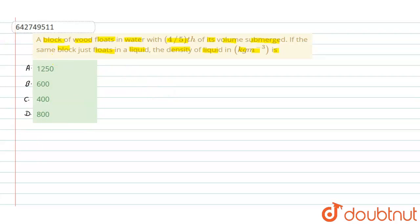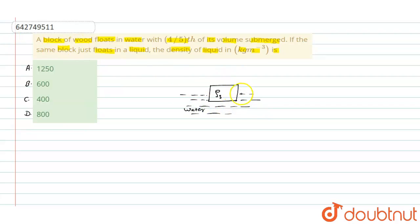We need to examine the conditions. Suppose we have a block of wood with density ρs, and this block is floating in water. The submerged volume of the wooden block is four-fifths of its total volume V. Due to the mass m of this block, there is a gravitational force acting downward, and since the block is floating, we write the condition for floating.